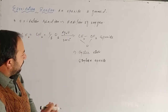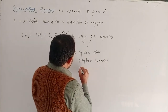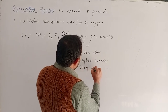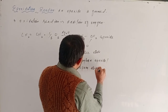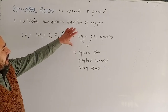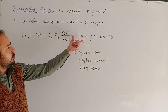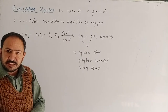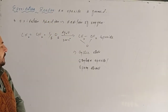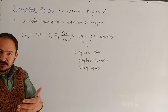This reaction is called epoxidation reaction. Now we are going to take a second example using a cyclic alkene.